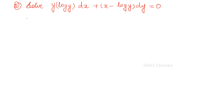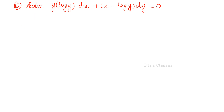Next question: y·log y dx. Since y appears as log y, it is not linear in y. So it has to be linear in x. Let us check — x has power 1 only, and if you bring dy to the left it becomes dx/dy with power 1. That means it is linear in x.